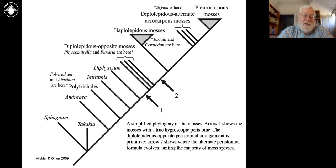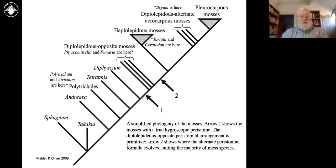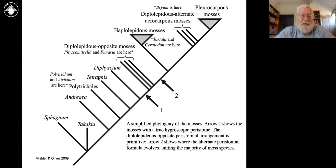None of these early groups — Andreaea, Takakia, Sphagnum — have peristomes. Then Polytrichales is a division a bit further up in the phylogeny. I've shown you several of those already and they have a peristome, but it's of a particular type — a kind of primitive multicellular arrangement of cells not considered the true peristome; it's more like a precursor. Tetraphis, which you may have seen in our redwood forests, has four large peristome teeth of the Polytrichum kind, and also does not have a true peristome.